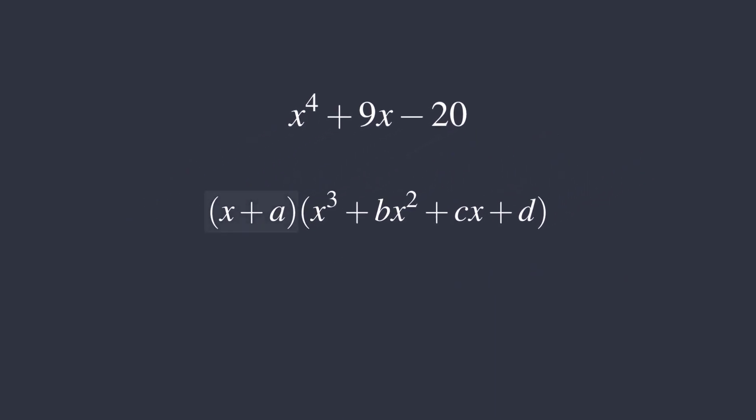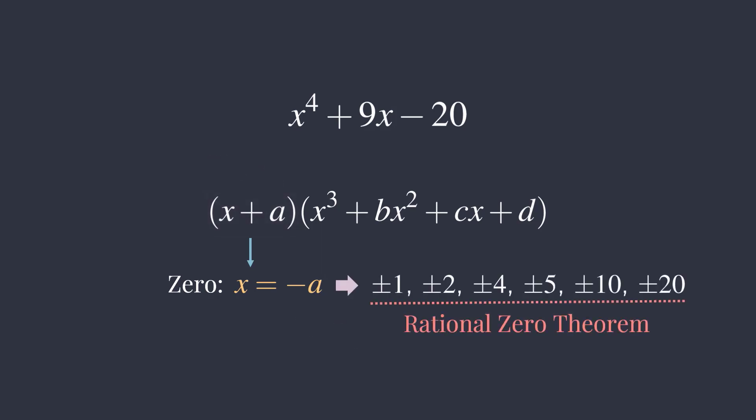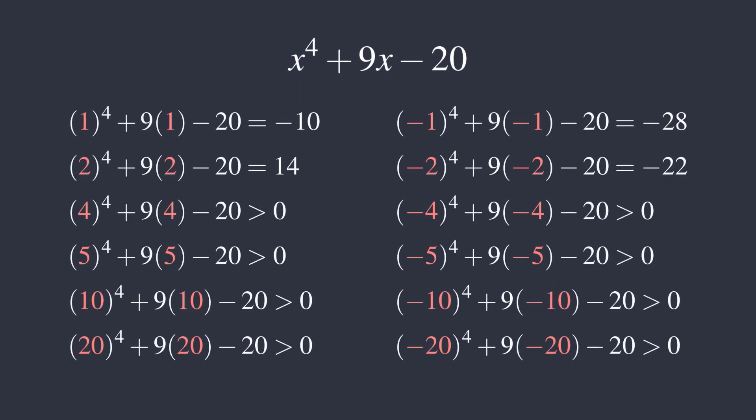Looking at the first case, from the linear factor x plus a, we know that negative a must be a zero of the polynomial. Since a is an integer, negative a must also be an integer and can only be one of these, according to the rational zero theorem. Plugging any of these into the original polynomial, we can show that none of them is a zero.